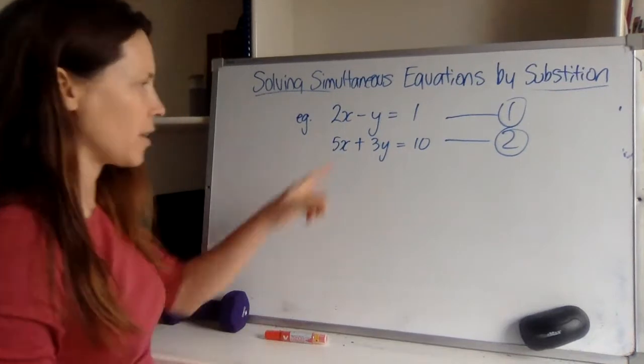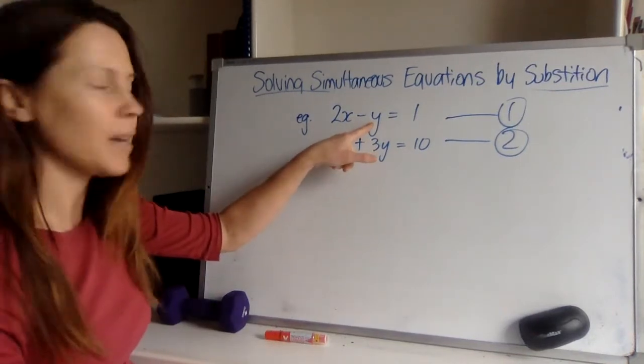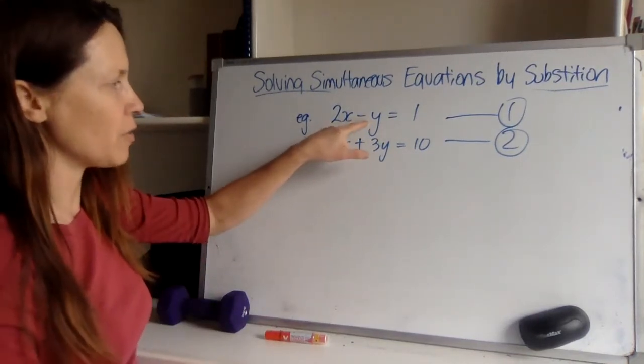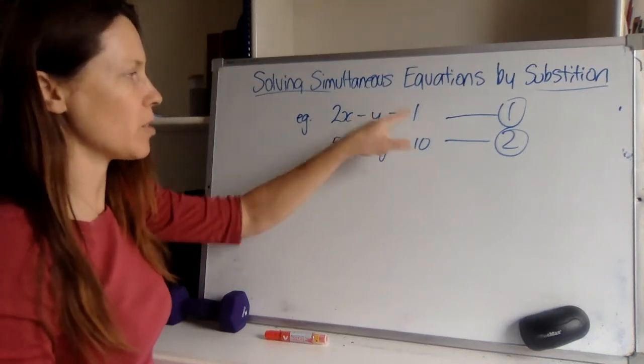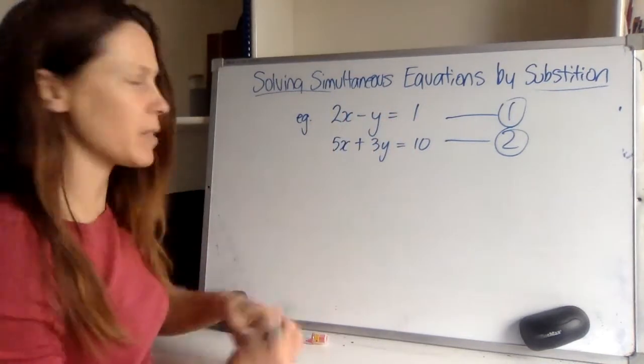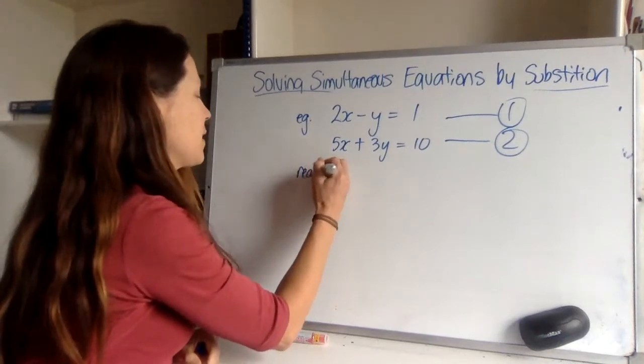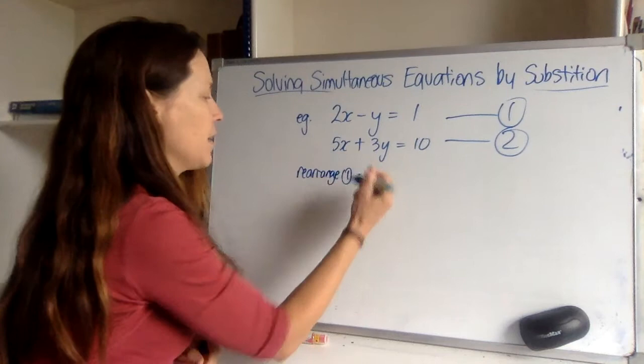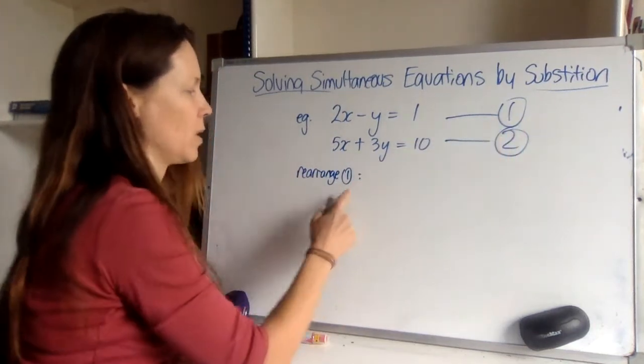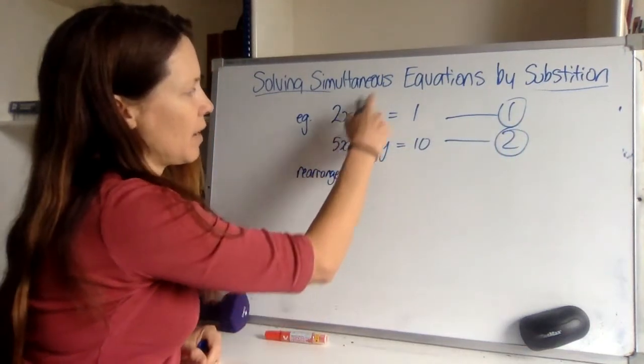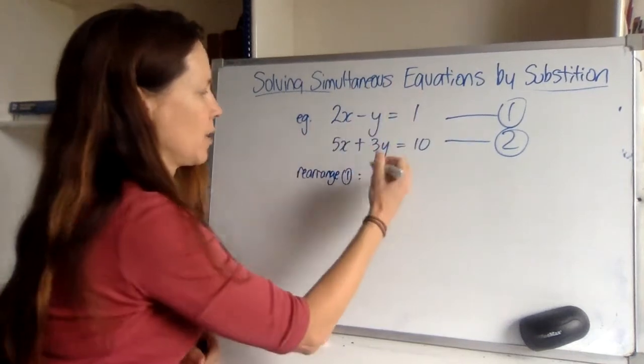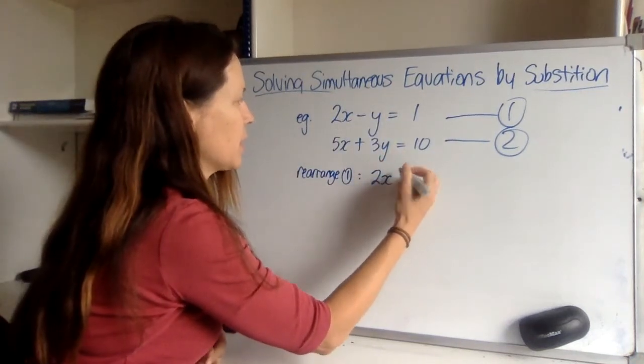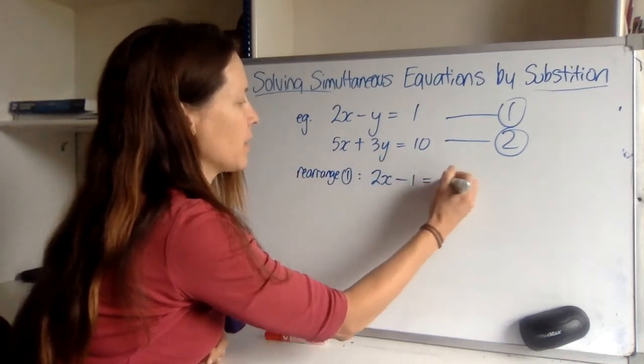Now to solve these I'm going to have to get either the x or the y by itself. The easiest one to get on its own, I think, is this y because it doesn't have a coefficient in front of it. So if I add y to both sides and subtract 1 from both sides, I can rearrange equation 1, and I can see that 2x minus 1 is going to equal y.